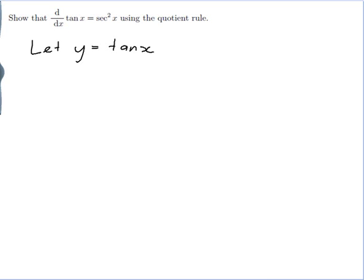And I've been told to use the quotient rule, and the quotient rule is specifically designed to differentiate fractions of functions. So I would need to write tan x as a fraction in order to use the quotient rule. And that's okay because tan x is a fraction. It's sin x on cos x.